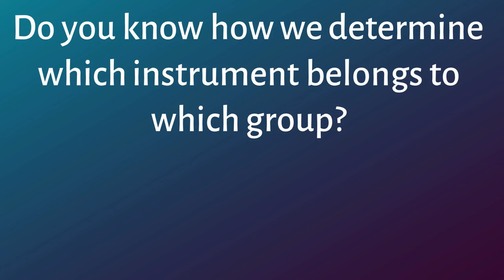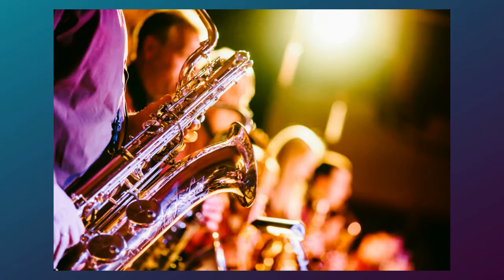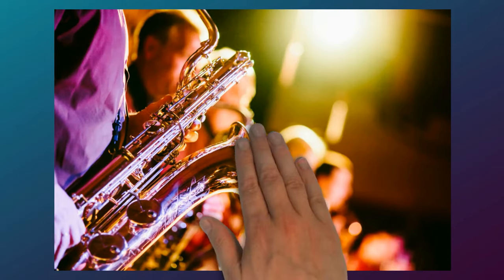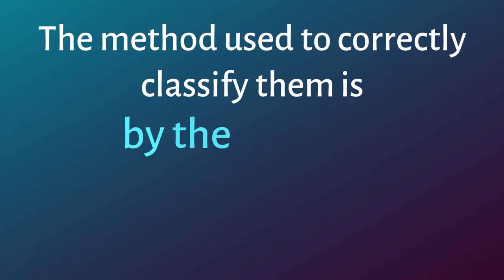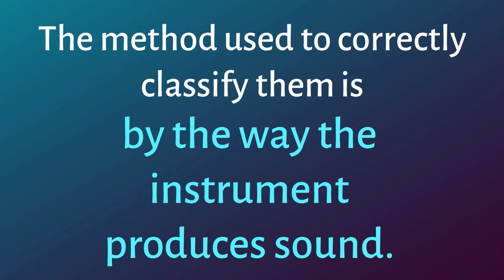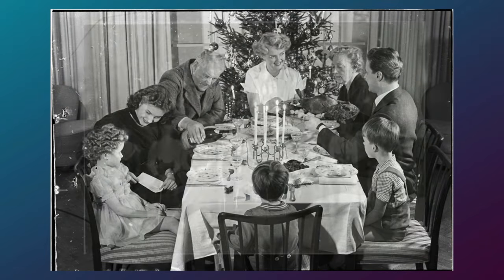It has nothing to do with what the instrument is made of, as some might think. While you may be tempted to call a saxophone a brass instrument because it appears to be made out of brass, doing so is incorrect. The method used to correctly classify them is by the way the instrument produces sound. Once the way an instrument produces sound is determined, it can be placed in one of the families of instruments.